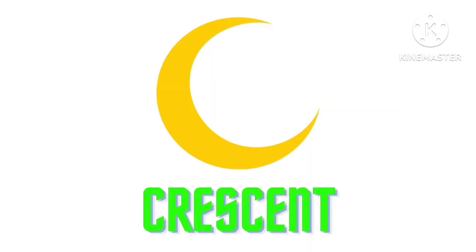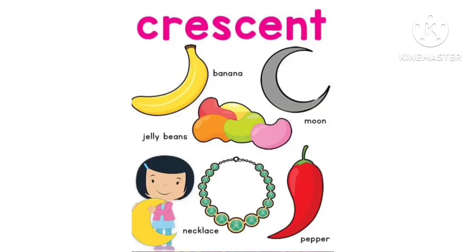Crescent. Crescent example: banana, necklace, pepper, moose, jelly beans.